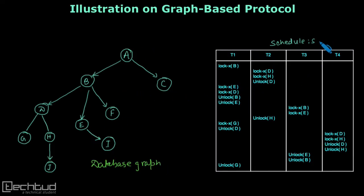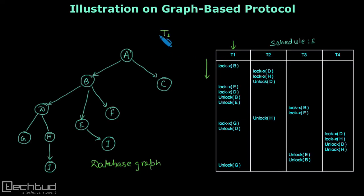Now we need to check whether this schedule is correct or not. To start with, we know that the schedule progresses in this manner. The first operation executed belongs to transaction T1, so transaction T1 starts first. It acquires a lock on B. As we know, the first lock can be acquired at any point of time, so this lock on B is granted.